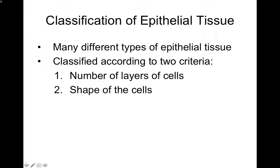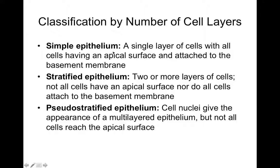Epithelial tissues are classified based on their cell shape and the number of layers. One layer of cells is called simple, and multiple layers is called stratified. Pseudostratified epithelium looks like it's stratified but is actually just one cell layer. The only pseudostratified variety we'll talk about is the pseudostratified ciliated columnar epithelium, which is found lining the respiratory tract.